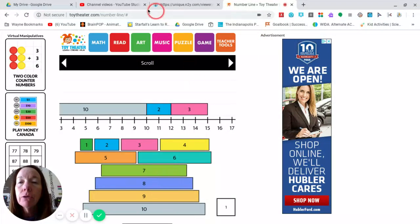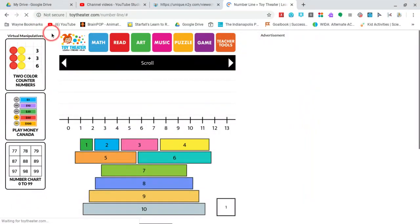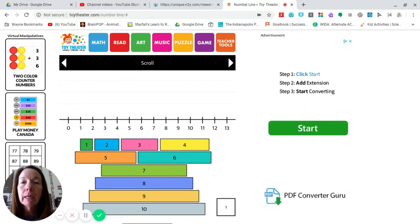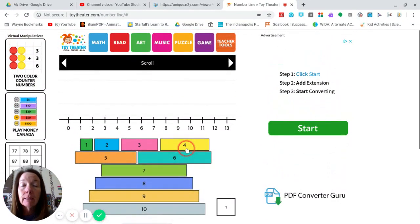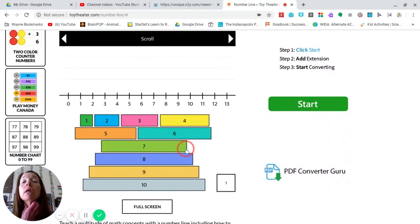Another thing that you can do to help you complete your work is to use toytheater.com and go to their number line. If you go to teacher tools, which is this little tab here, you can go to number line and get this. This is a really handy tool that we're going to use.